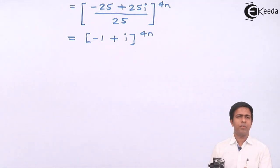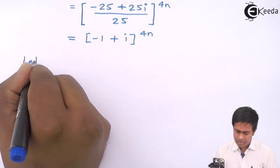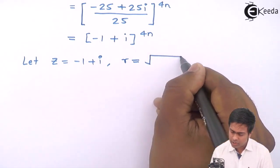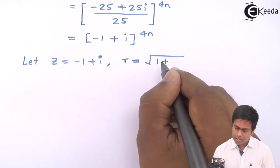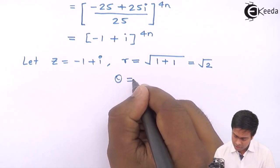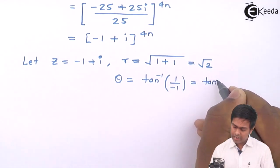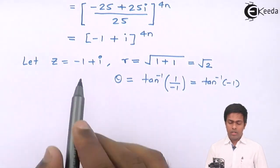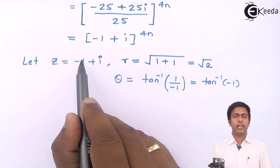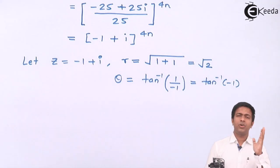Now we convert this standard form to polar form. Let z = -1 + i. We need r and θ. Here r = √(x² + y²) = √((-1)² + 1²) = √2. For θ, we compute tan⁻¹(y/x) = tan⁻¹(1/(-1)) = tan⁻¹(-1). Plotting -1 + i on the coordinate system, it lies in the second quadrant since x is negative and y is positive.